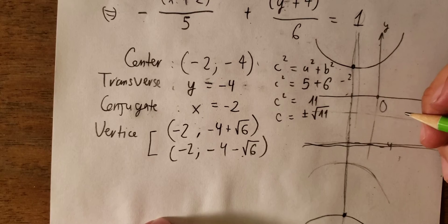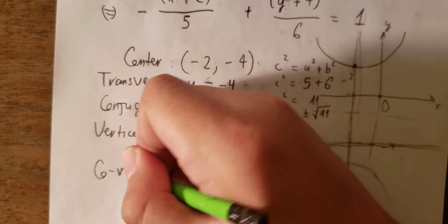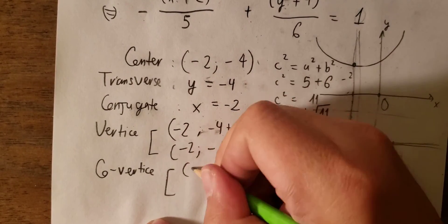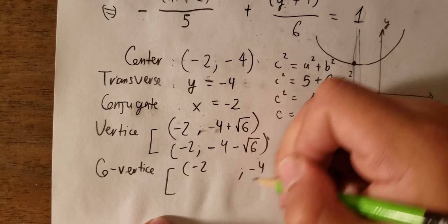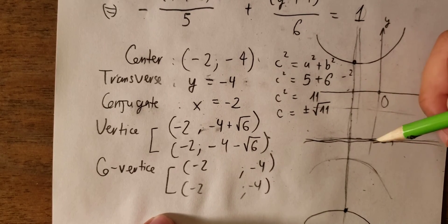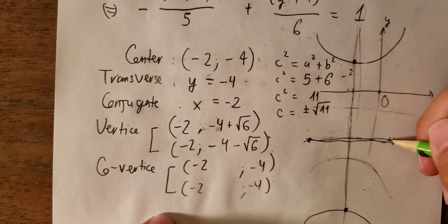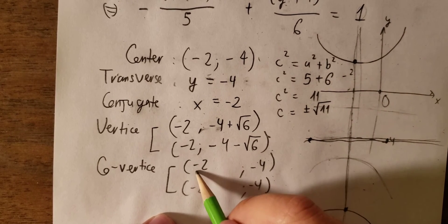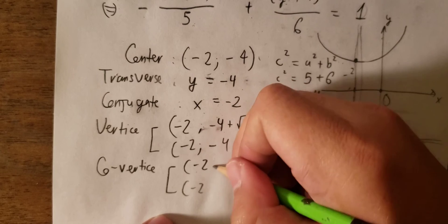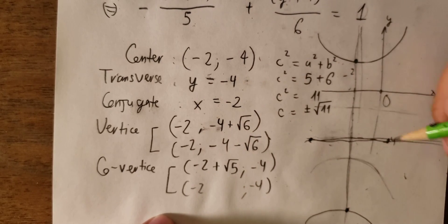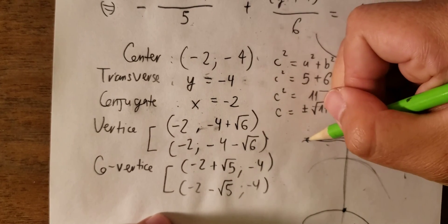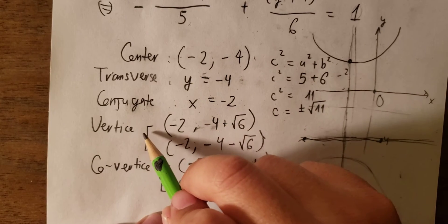If the question asks about co-vertices, we use the center (minus 2, minus 4) again, but now we move along the x-direction. We have a² equal to 5, so we add and subtract the square root of 5 to the x-coordinate. The co-vertices are at (minus 2 plus square root of 5, minus 4) and (minus 2 minus square root of 5, minus 4).